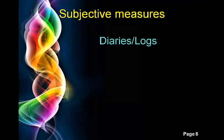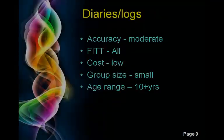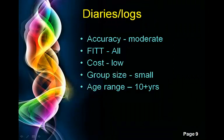The subjective measures we usually look at are diaries and logs, recall, interviews, and a proxy report. Diaries and logs are where a person keeps a personal record of their daily physical activities. They're fairly accurate and measure all of the FIT principles — frequency, intensity, type, and time — which is excellent for assessing whether someone is meeting the National Physical Activity Guidelines. They're low cost, but you can really only run this with a small group size because of the volume of data. The suitable age range is 10 years and up.